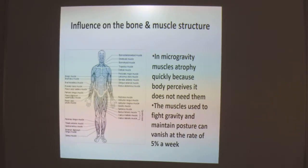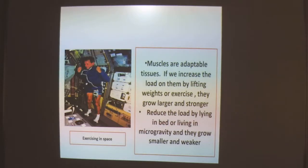Microgravity also has an influence on bone and muscle structure. In microgravity, muscles atrophy quickly because the body senses it does not need them. Muscles used to fight gravity and maintain posture — called anti-gravity muscles — can vanish at a rate of 5% per week. Muscles are adaptable tissue; if we increase the load by lifting weights or exercising, they grow larger and stronger. But reduce the load by lying in bed or living in microgravity, and muscles decrease in size and become weaker.